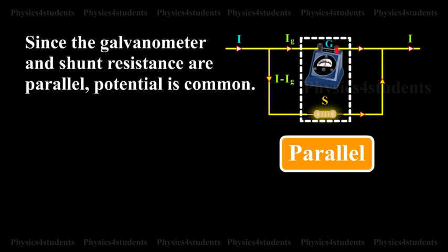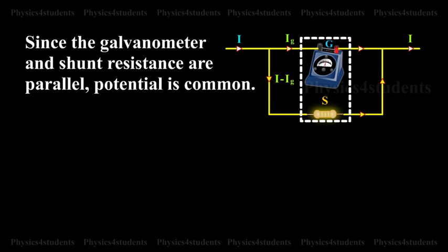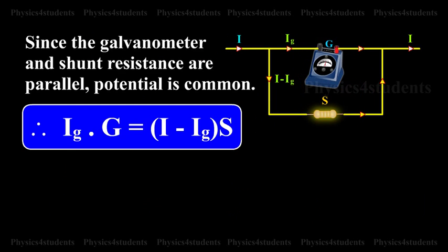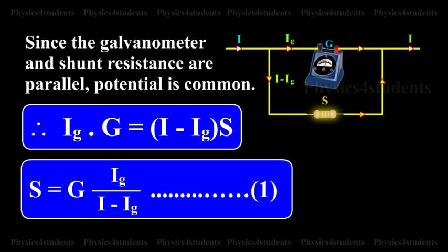Since the galvanometer and shunt resistance are parallel, potential is common. IG into G is equal to I minus IG into S. S is equal to G into IG divided by I minus IG.